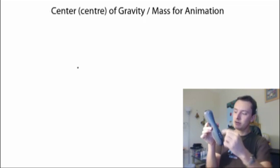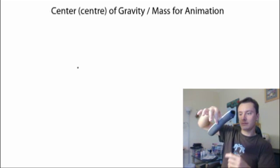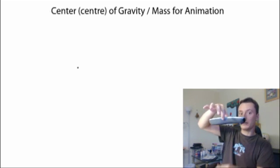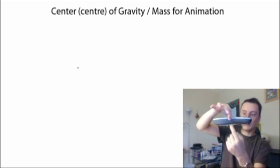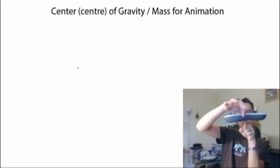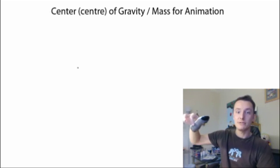For example, this remote, the center of mass is, let's find it. You can tell the center of mass because you should be able to put a point through it. It's going to be in there. The reason for the center of mass being there is, at this end, it's slightly heavier because it has batteries in it.